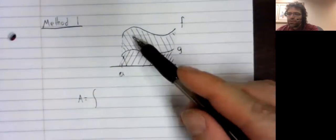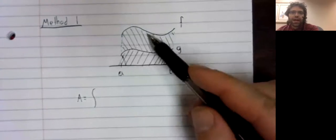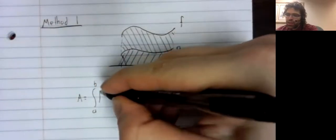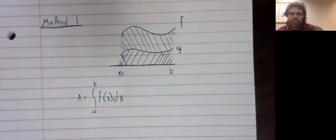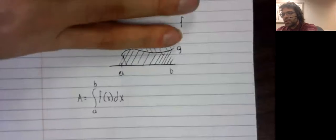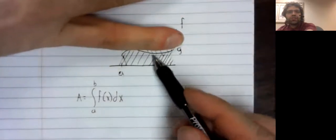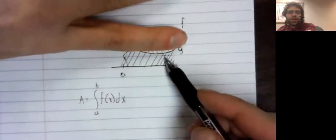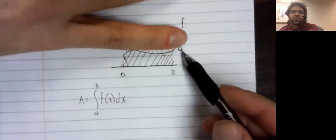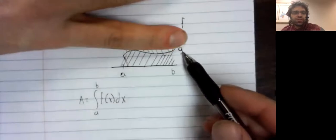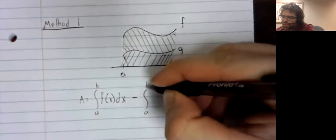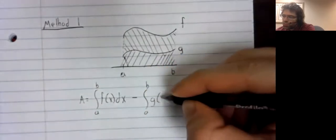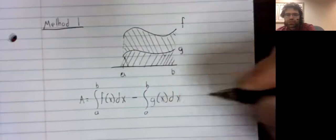We start by finding the area under F, the area of this whole region. And the area under a curve is its definite integral. And now we'll get rid of this unwanted area. And this unwanted area is precisely the area below this curve, which is also a definite integral.